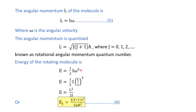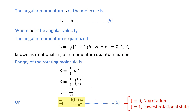From the energy expression, substituting omega² equals L²/I² and then inserting the quantized value of L, we arrive at E_j equals j(j+1)·ℏ² divided by 2·mu·r². By changing the value of j, the rotational energy changes — the energy is quantized with discrete values. j equals 0 means no rotation; j equals 1 is the lowest rotational state.